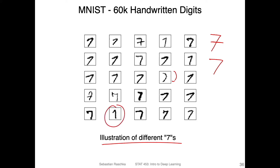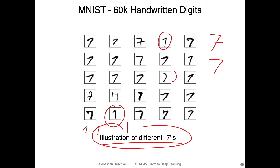This one is actually interesting: in Germany we write a one with a serif, while in the US a one is usually written differently. Just by looking at these handwritings, it's sometimes not even clear what the number is. If I wouldn't tell you these are different illustrations of sevens, some people might think these are ones — or even a C if you had a dataset of letters and digits.